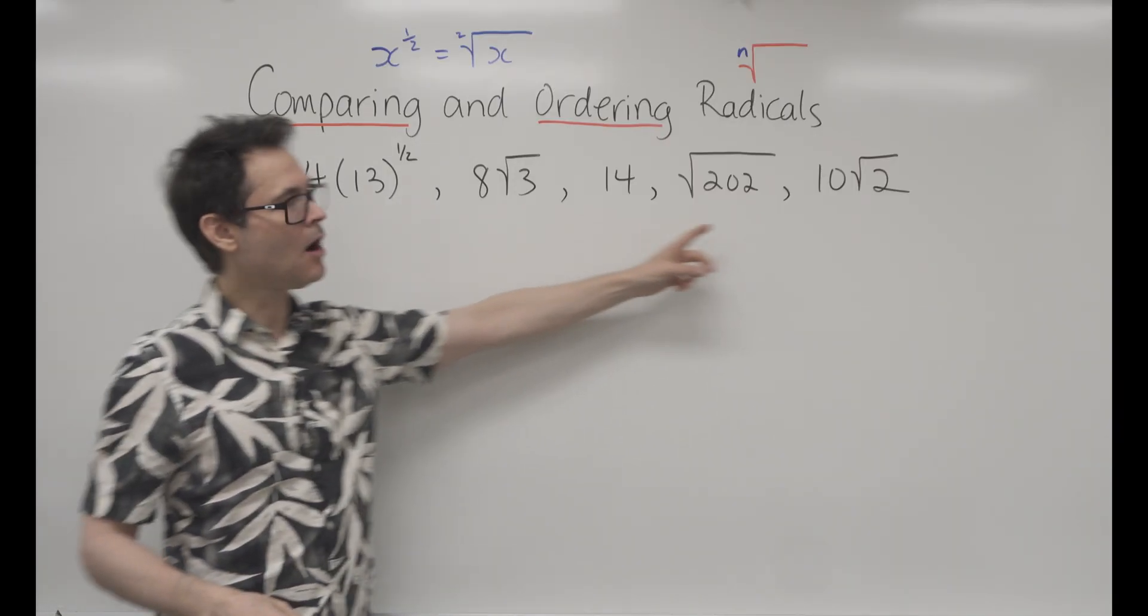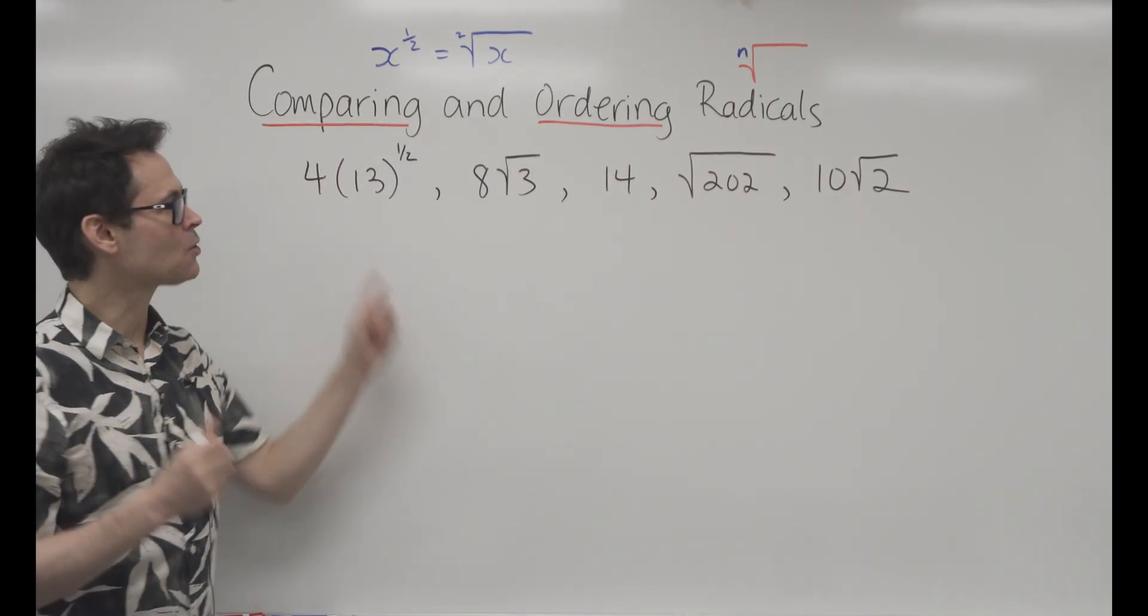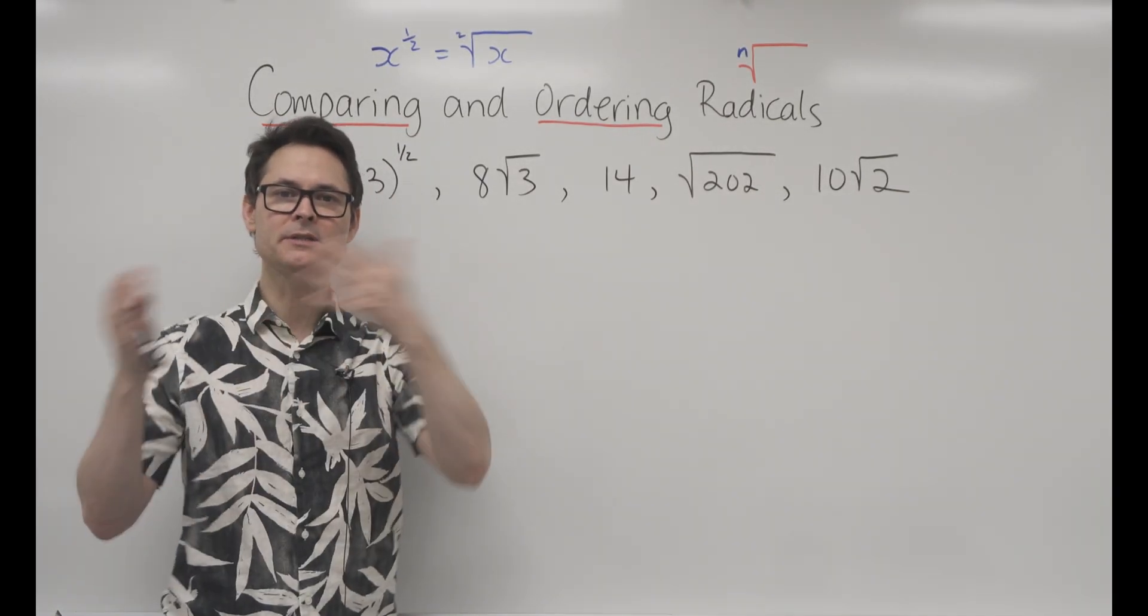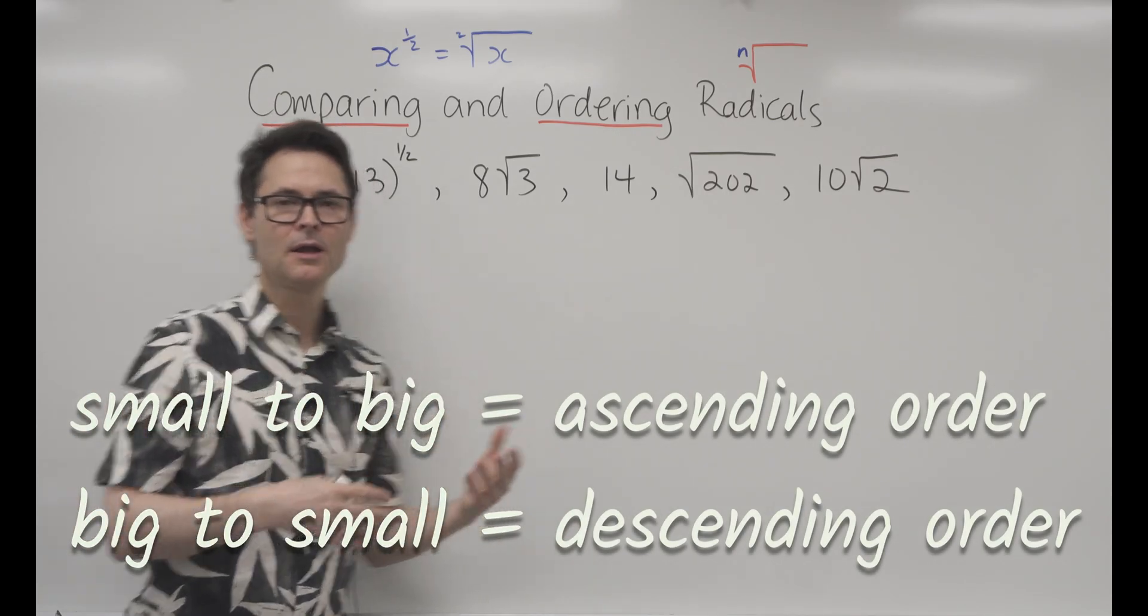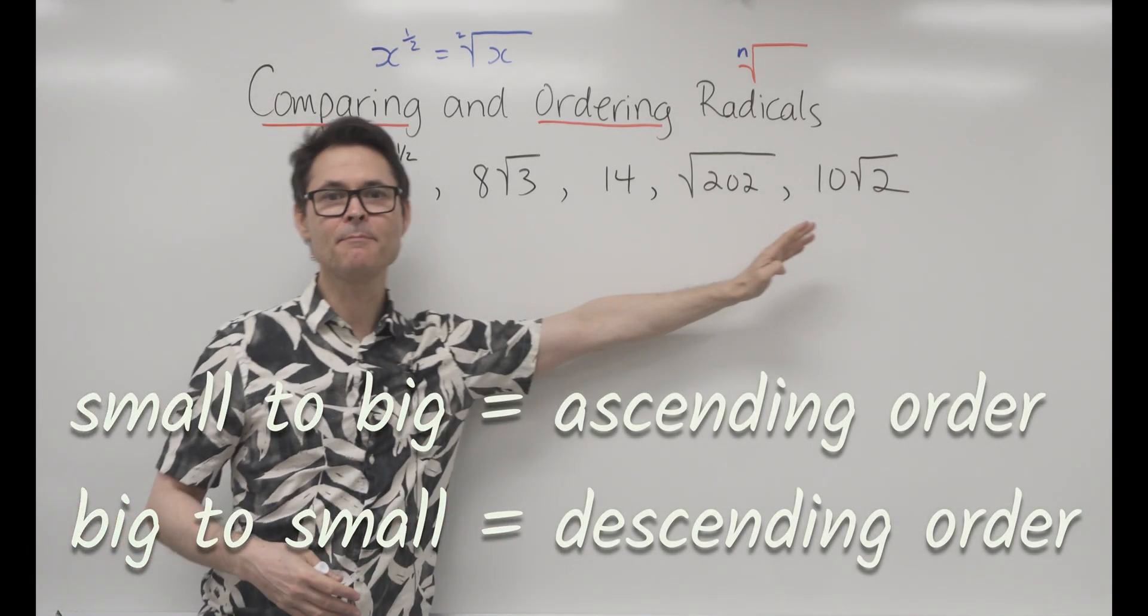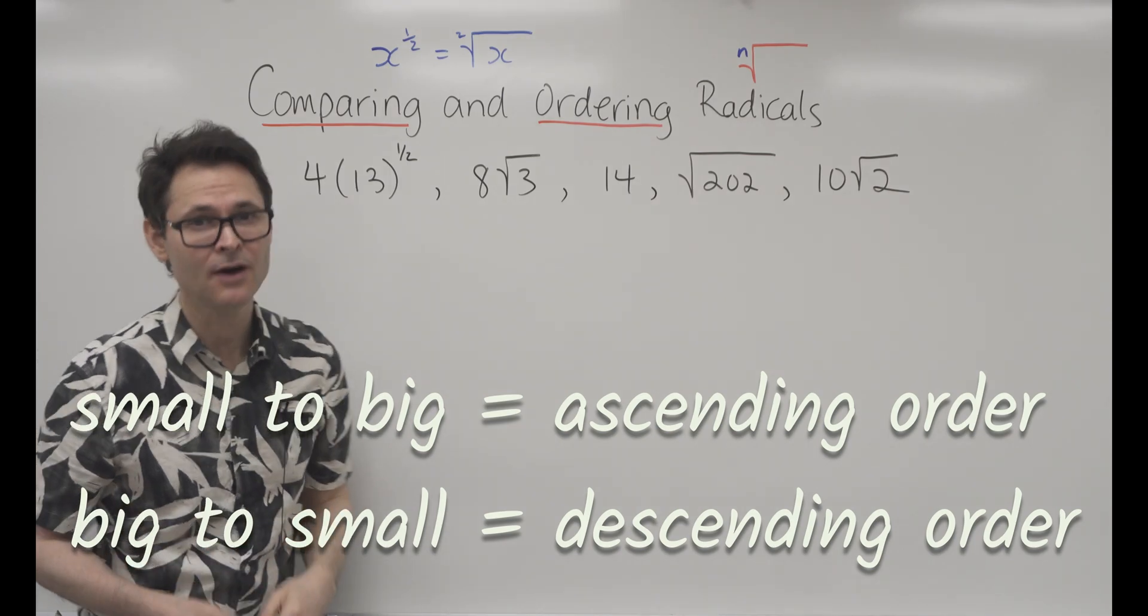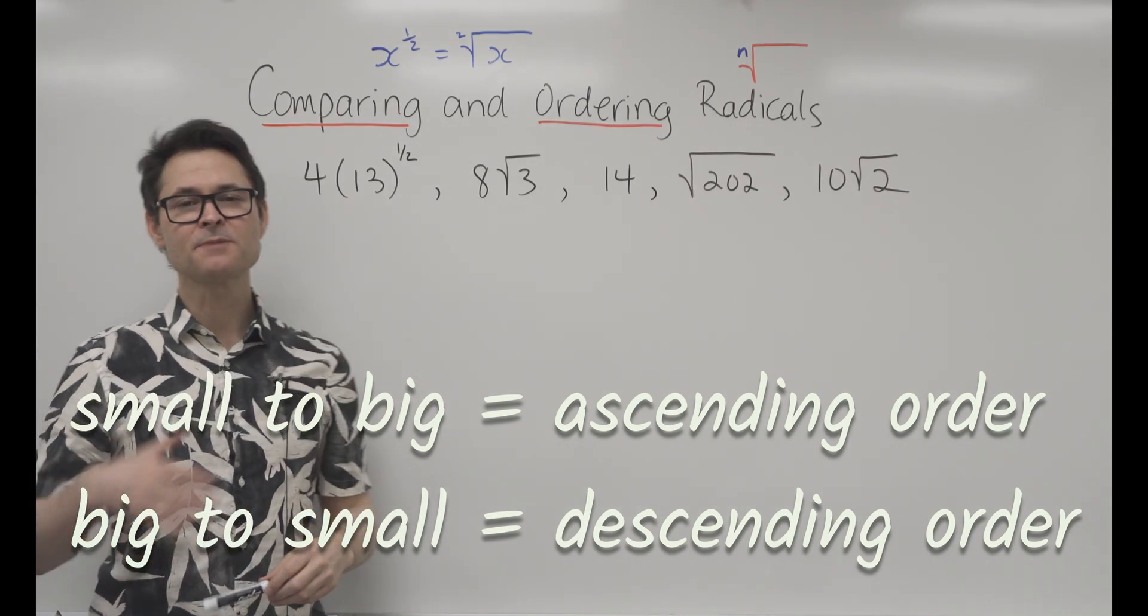A really common question about radicals is ordering them from small to big or big to small. That means we need a way to compare them, and you can't use your calculator. So you have to do this by hand.